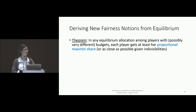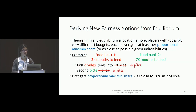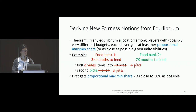Let me demonstrate through an example. We have food banks that differ greatly in entitlement. The first food bank caters to 30% of the population. What's intuitively fair is to let the first one divide the items into 10 piles and let the second pick seven piles. This ensures the first gets what we call the proportional maximin share — as close to 30% of the resources in their view as possible. We can also let the first player divide into four items and let the other choose three, if that works better.